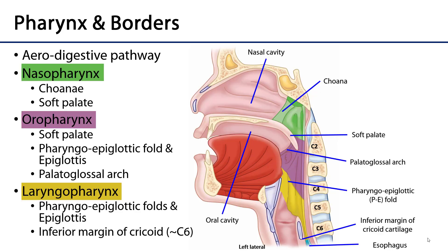This is a sagittal view of the pharynx, or colloquially the throat. We call it an aerodigestive pathway because it is a common pathway for both the respiratory and digestive systems. There are three subcomponents to the pharynx: superiorly the nasopharynx, then the oropharynx, and inferiorly the laryngopharynx.